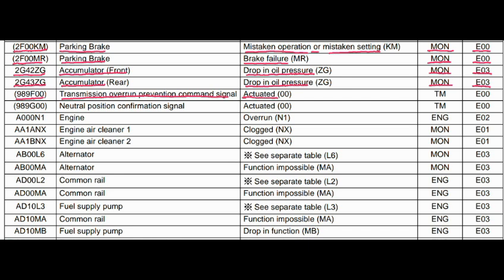Code 989F00. Where is the problem? Transmission overrun prevention command signal. What is the problem? Actuated. Transmission controller is related to this fault, and the action code is E03. Code 989F00 — where is the problem? Neutral position confirmation signal. What is the problem? Actuated. Transmission controller is related to this fault, and the action code is E00.